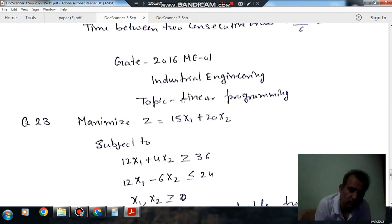Hello and welcome again. We are solving some questions of industrial engineering and topic linear programming. Question number 23 from Gate 2016 ME-01. Maximize Z equals 15x1 plus 20x2.